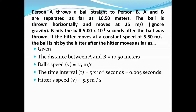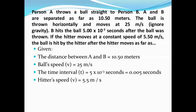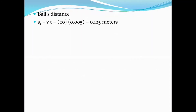It is also given. What we have to find is listed in the problem statement. As far as the distance covered by the object which is thrown — I had mistakenly written 20, but the velocity is 25 — so 25 times 0.005 is 0.125 meters.